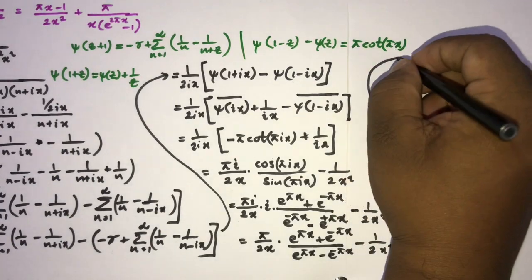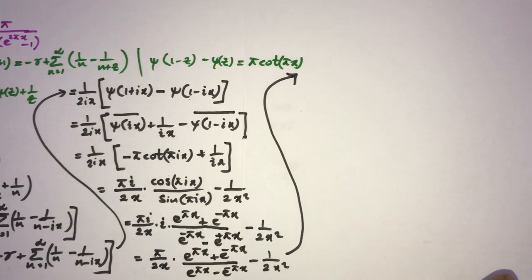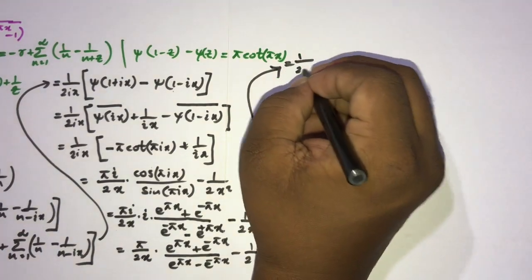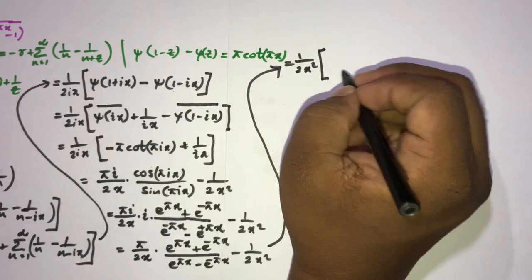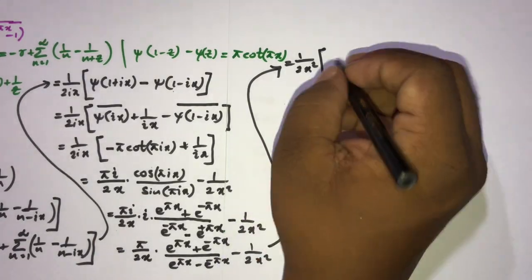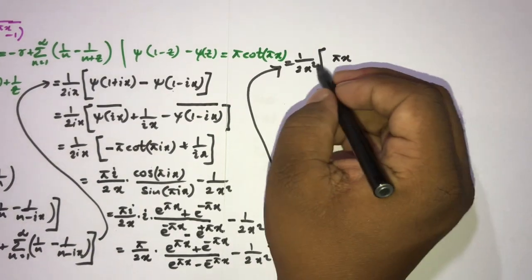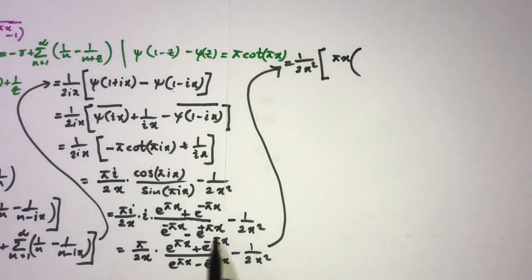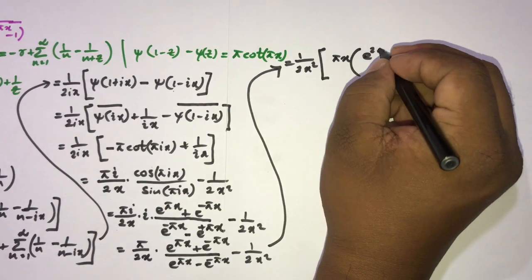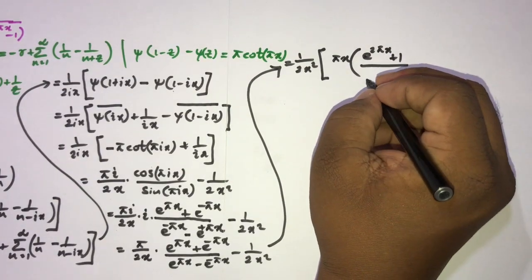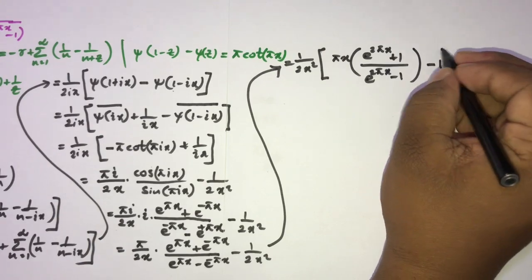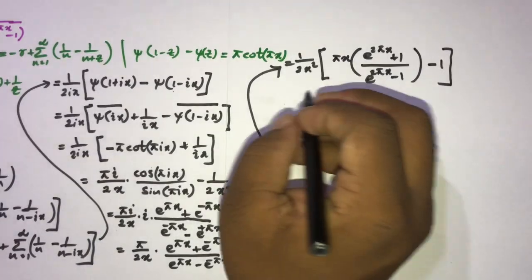Now simplifying: I take 1/(2x²) as a common factor. Note that e^(−πx) = 1/e^(πx), so we can rewrite the fraction as (e^(2πx) + 1)/(e^(2πx) − 1). The expression becomes π/(2x) · (e^(2πx) + 1)/(e^(2πx) − 1) − 1/(2x²).